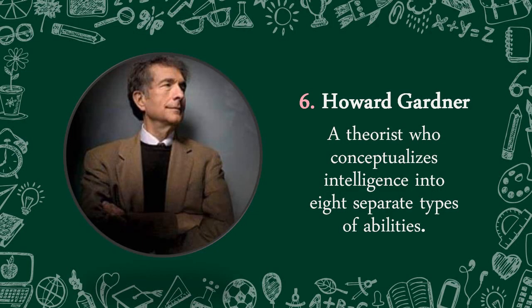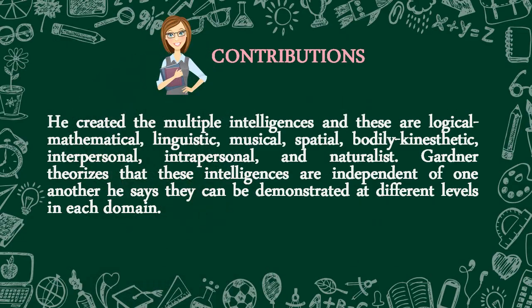Our sixth Theorist is Howard Gardner. He is a theorist who conceptualizes intelligence into eight separate types of abilities. He created the theory of multiple intelligences, and these are logical, mathematical, linguistic, musical, spatial, bodily-kinesthetic, interpersonal, intrapersonal, and naturalist.